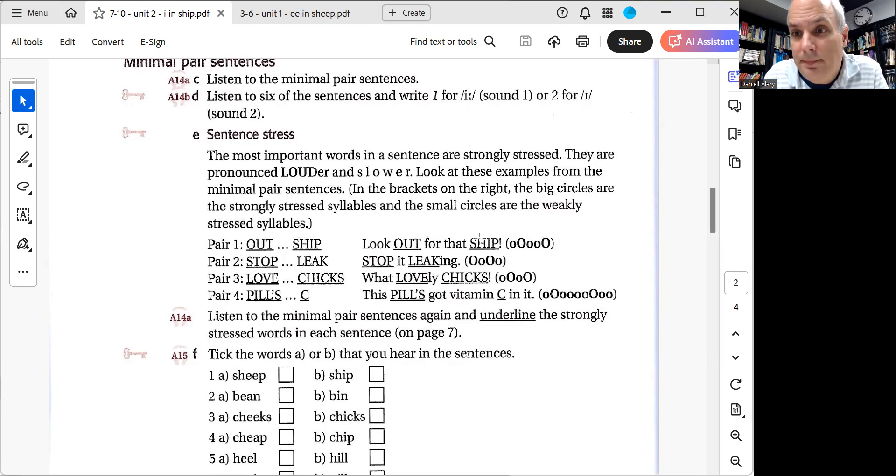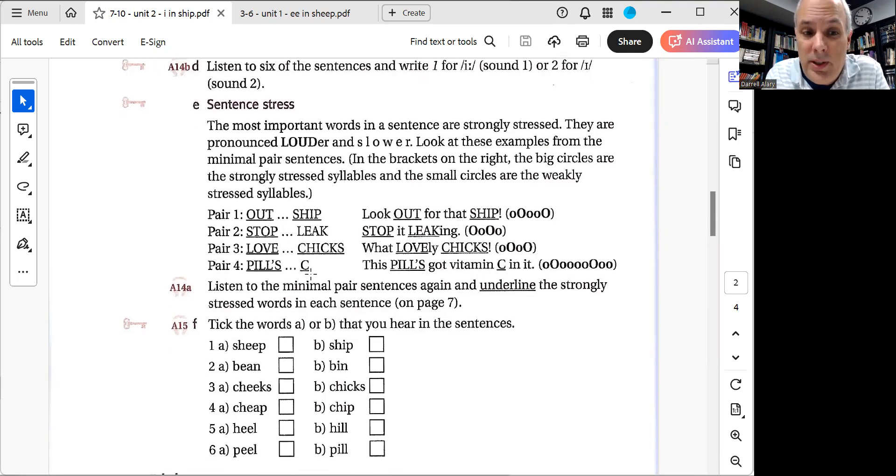So the key words here are out and ship. Look out for that ship. Stop and leak. Stop it leaking. The IT is faster and a little bit quieter. Love and chicks. What lovely chicks. The LEE part is not so much emphasized. And then pills and see. This pill's got vitamin C in it. The IN IT is just really quick at the end. So this is not just about pronunciation, it's about having natural flow throughout the sentence. Please practice these when you can.